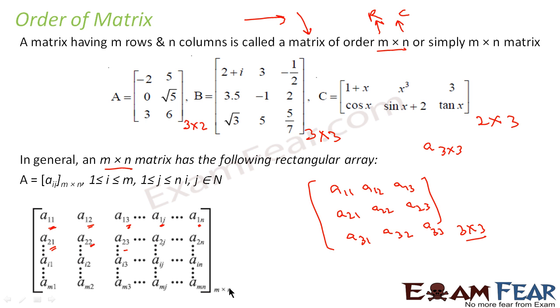Similarly, for m into n matrix, it will look like this. a11, a12 till a1n. Similarly, a21, a22, a2n and this goes till am. So this starts with am1, am2 till amn. Why m? Because there are m horizontal sets. So this is m here and n vertical sets. So this lies in here.